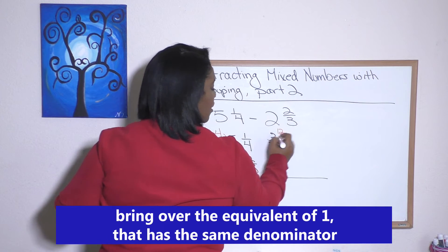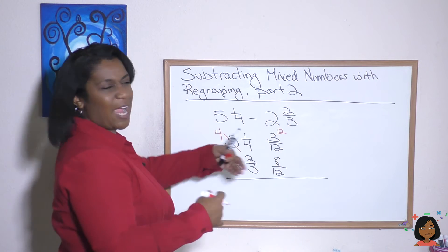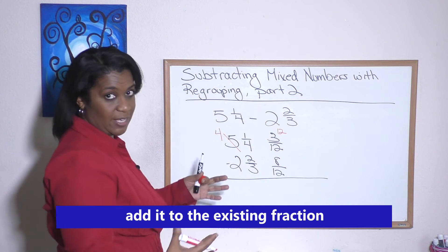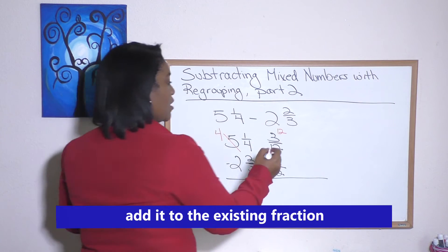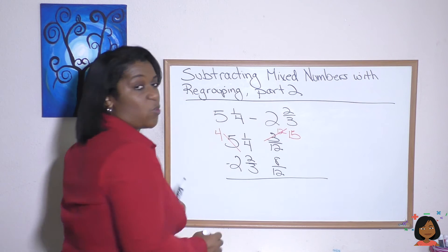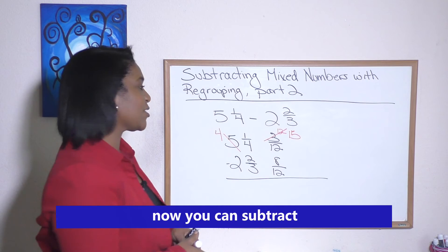Okay. I'm going to add it right here. 12 twelfths. And I'm not rewriting the twelfth part. I'm just putting my 12 there because I'm going to add it to my three that is already existing. So I'm going to cross this out and we have 15 twelfths.